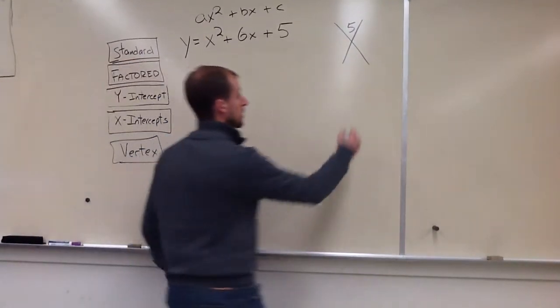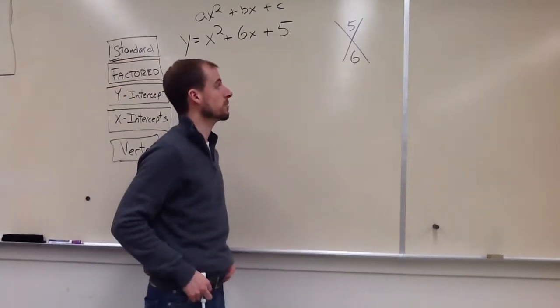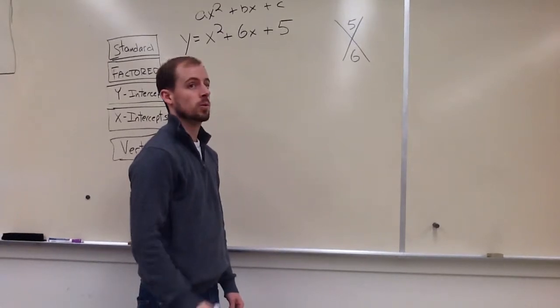6 is b, so that's going to go to the bottom. And I need two numbers that multiply together to give me 5, but add together to give me 6, which will be 1 and 5.